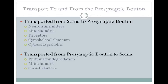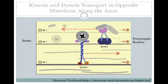Transport along the axon requires the use of motor proteins. There are two main motor proteins involved, each of which can only travel in one direction down the microtubule. Kinesin is a plus-directed motor protein that takes its cargo from the soma to the presynaptic bouton. Dynein goes the reverse direction — it's a minus-directed motor protein that goes from the presynaptic bouton back to the soma.